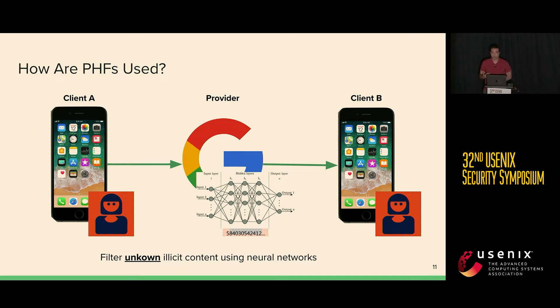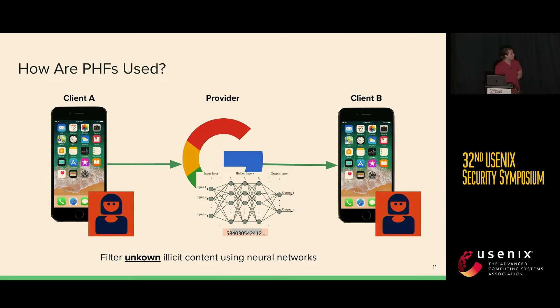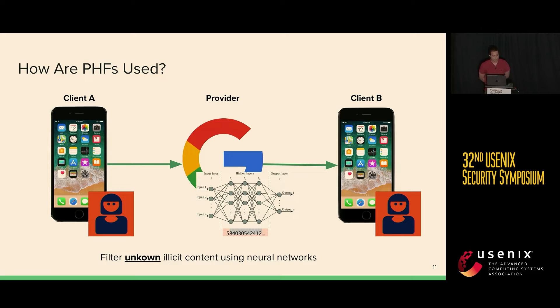What happens if we want to filter out more than just known illicit images — we want to also filter out unknown illicit images? To do this, providers such as Google or Apple can implement neural networks to classify these images as to whether or not they are illicit before sending them along to client B.